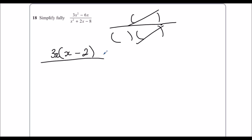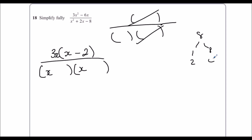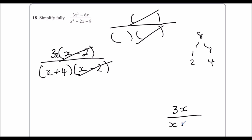Then I'm going to factorise the bottom. So it's a quadratic, x in both. What times to make 8? 1 and 8, or 2 and 4s. And adds to give a positive 2, so it's going to have to be plus 4 take away 2. We've got the same bracket here, so we can cancel them out. So it's 3x over x plus 4.